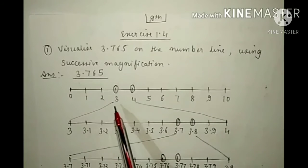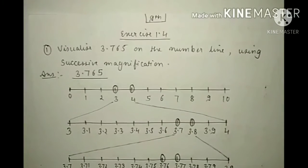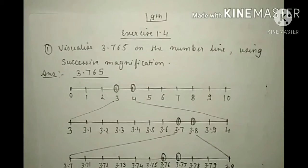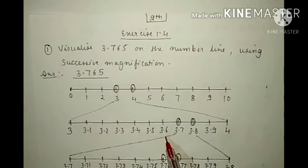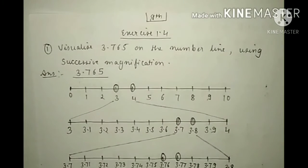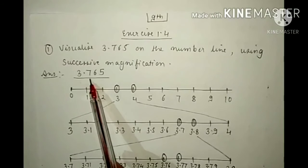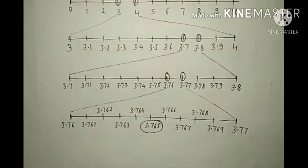Now below that, make another number line. Write 3 in the left corner and 4 in the right corner. Now write the numbers which come between 3 and 4: 3.1, 3.2, 3.3, 3.4, 3.5, 3.6, 3.7, 3.8, 3.9, then 4. We can see that our number is greater than 3.7 but less than 3.8, so mark 3.7 and 3.8.